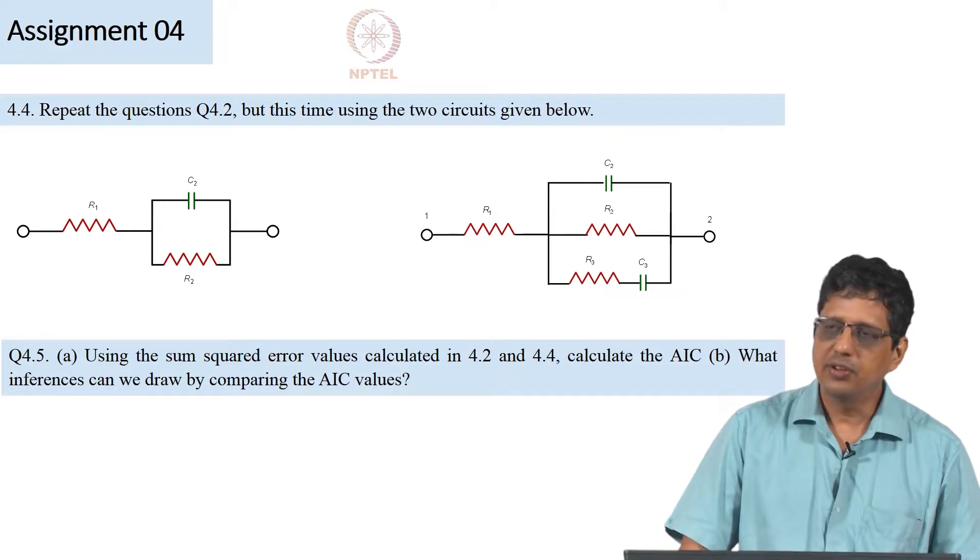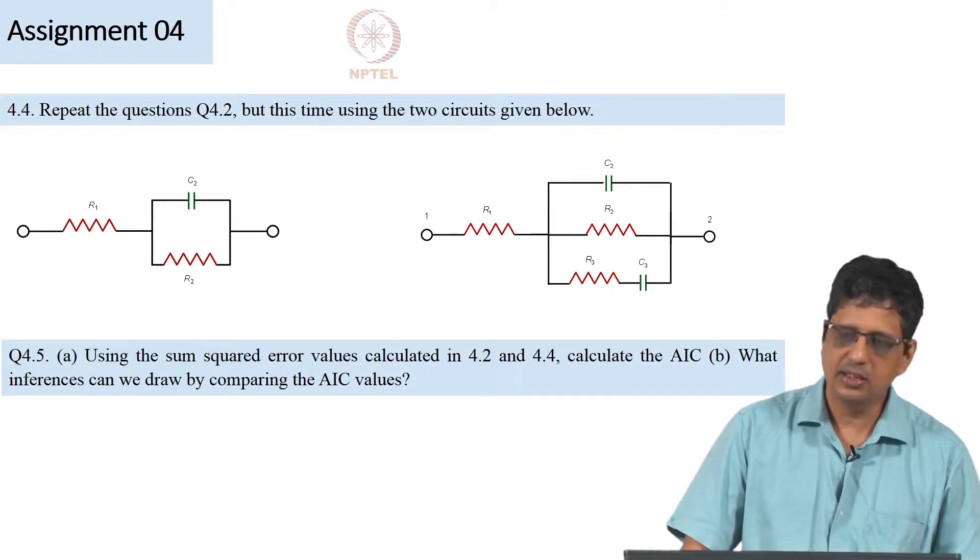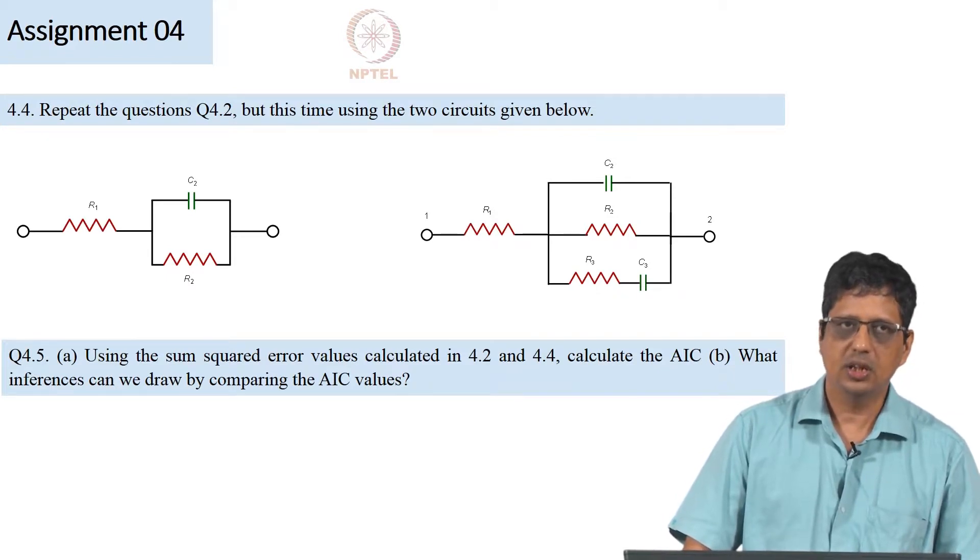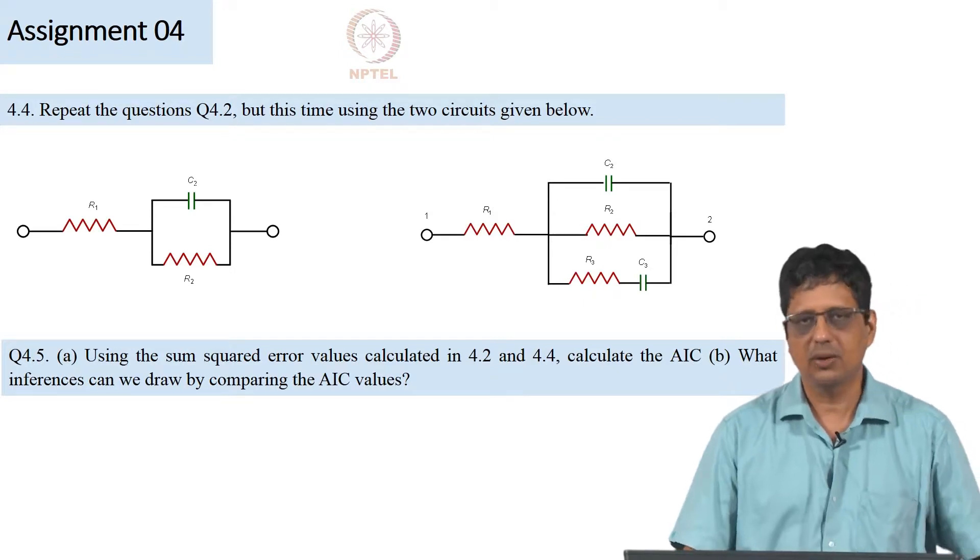Then what happens if I use a simpler circuit? If I use a Randall circuit, it will fit poorly, that you can guess. What are the parameter values? What are the confidence intervals in the parameter values? That is something I would like you to check. Chi-square value will be poor, that means a large value, but that is also something I would like you to check.